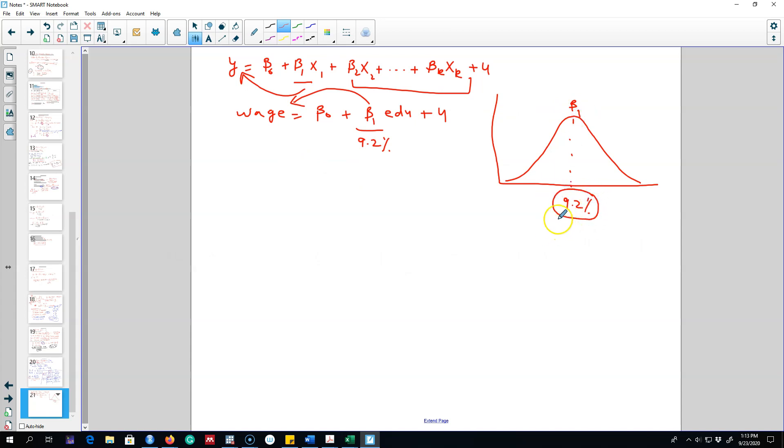For some people one year of extra education may be adding 20 percent to their wages, and for other people one year of extra education may be adding only three percent to their wages. But what we are saying here based on our model is that on average the effect is beta 1, that is 9.2 percent. So in nutshell this beta parameter shows us the average effect of that x variable on the y variable.